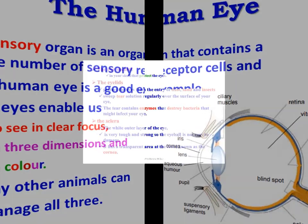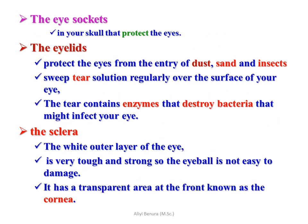The eye sits in a socket in your skull that protects it. The eyelids protect the eye from entry of dust, sand, and insects. Tears sweep a solution regularly over the surface of your eye. The tears contain enzymes that destroy bacteria that might infect your eye.